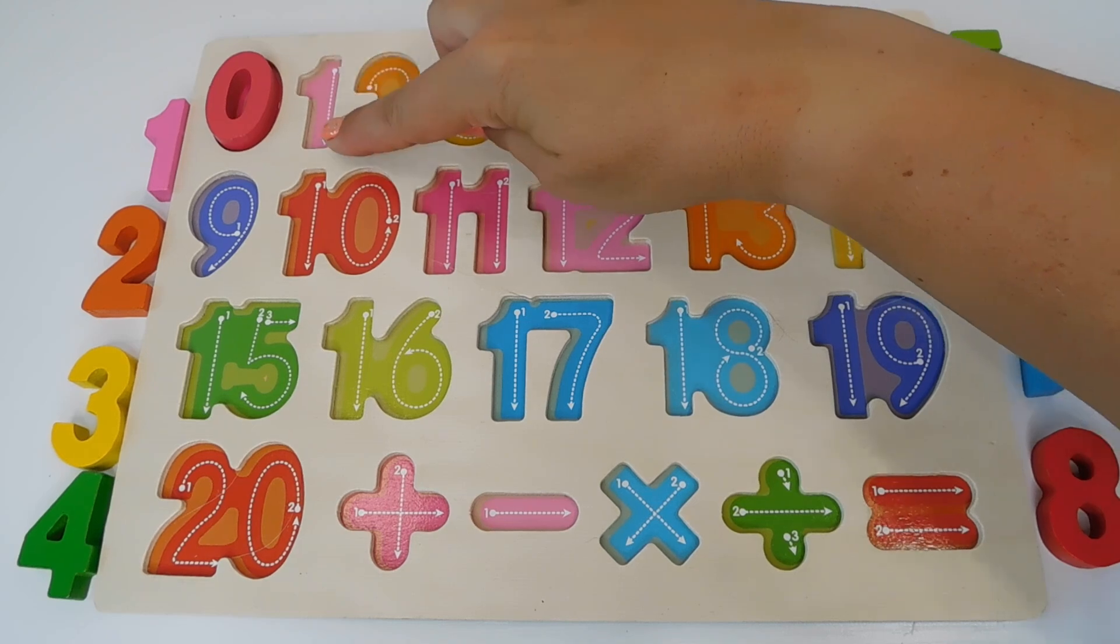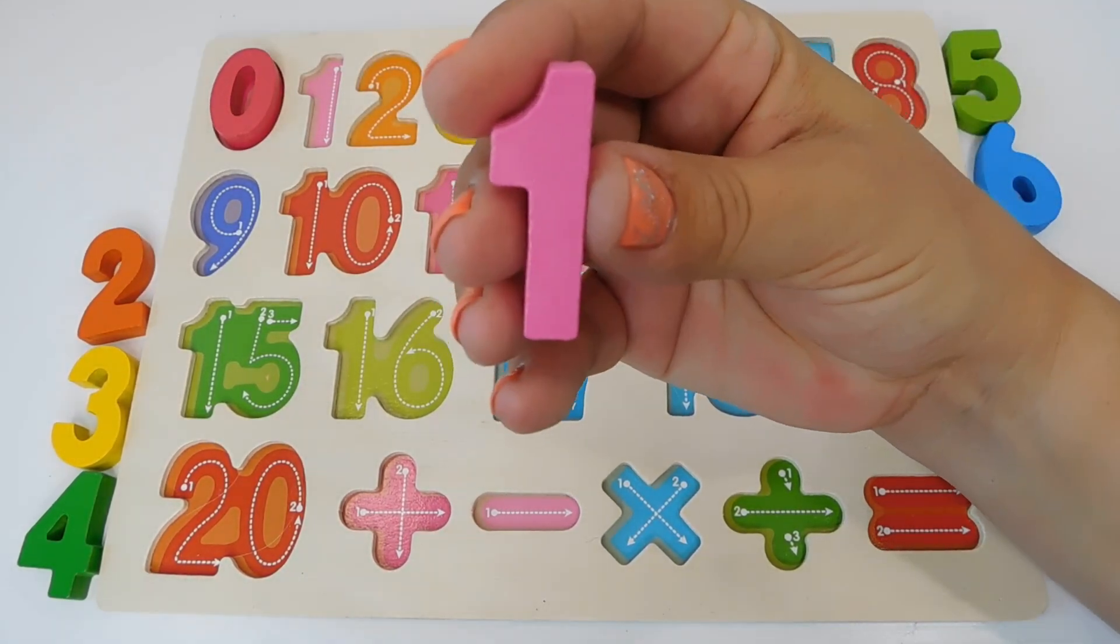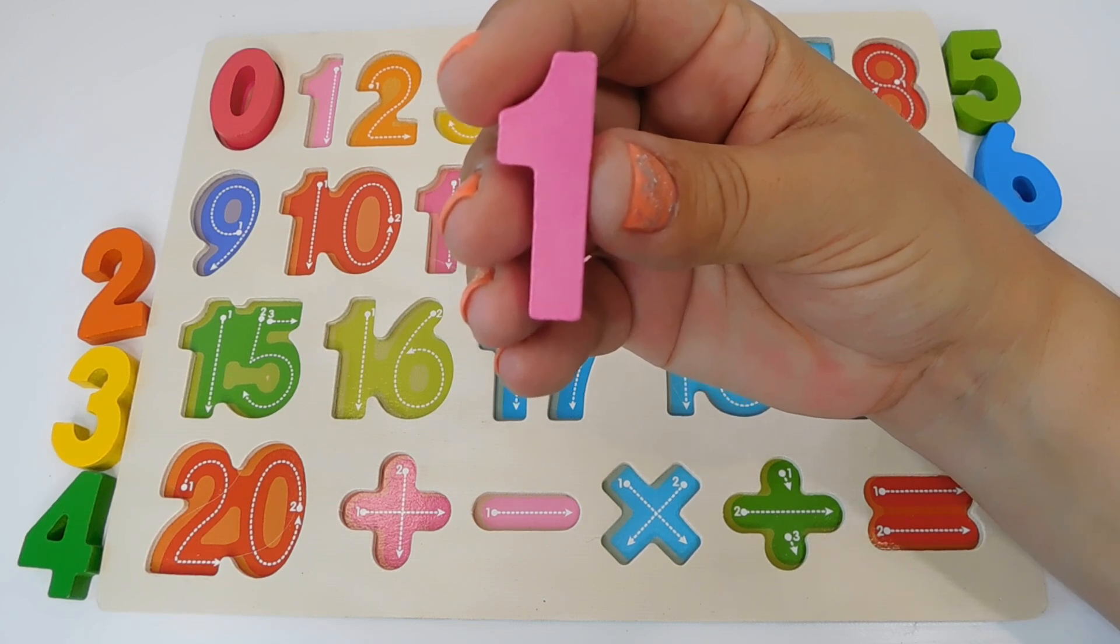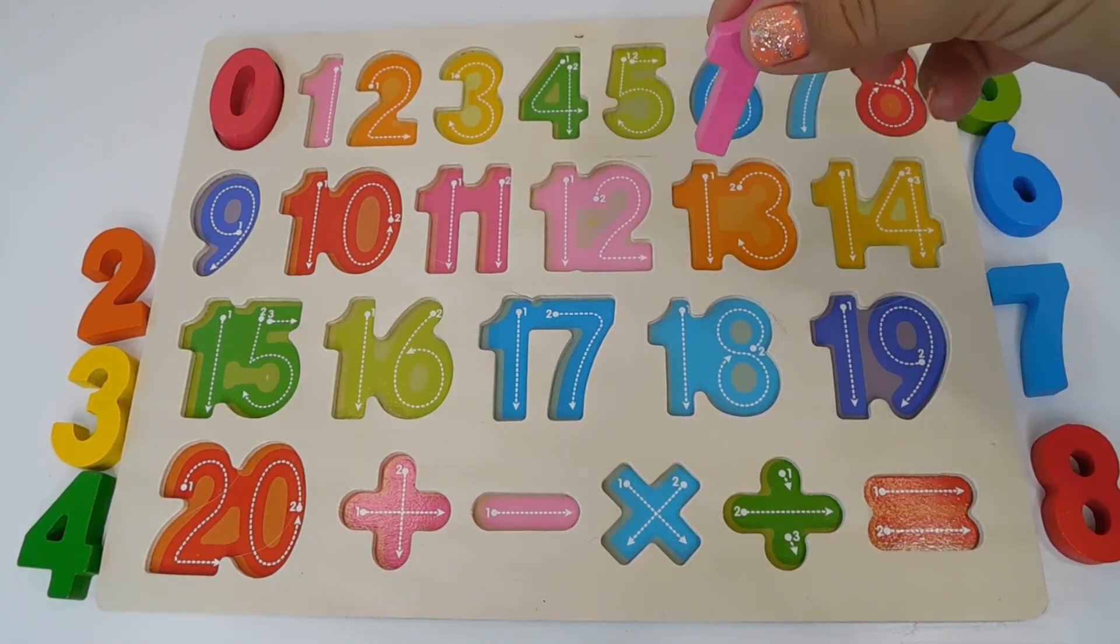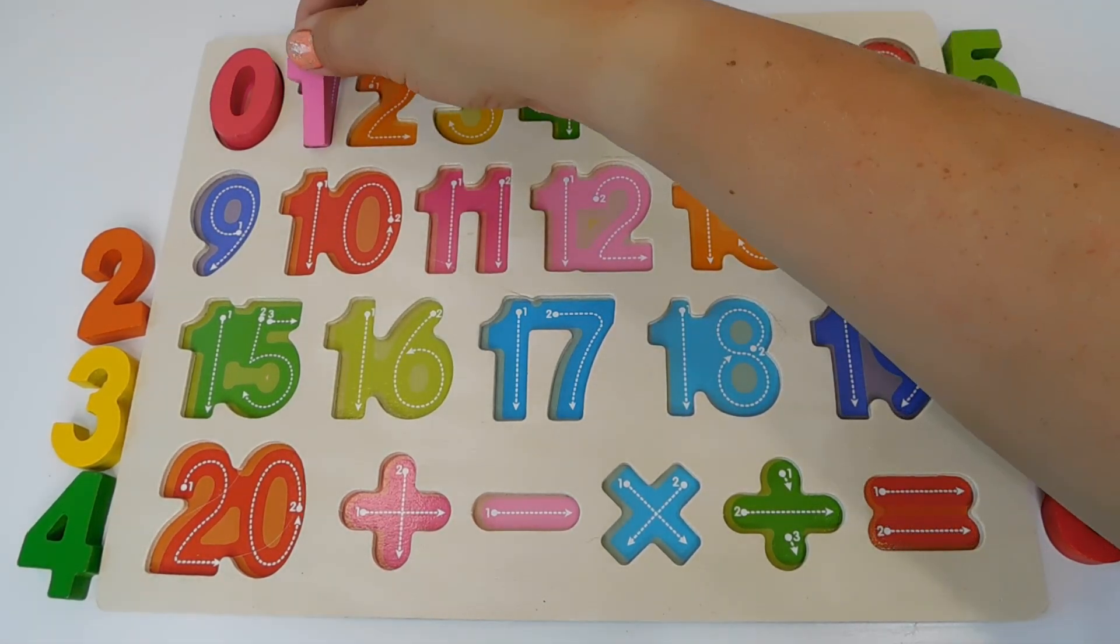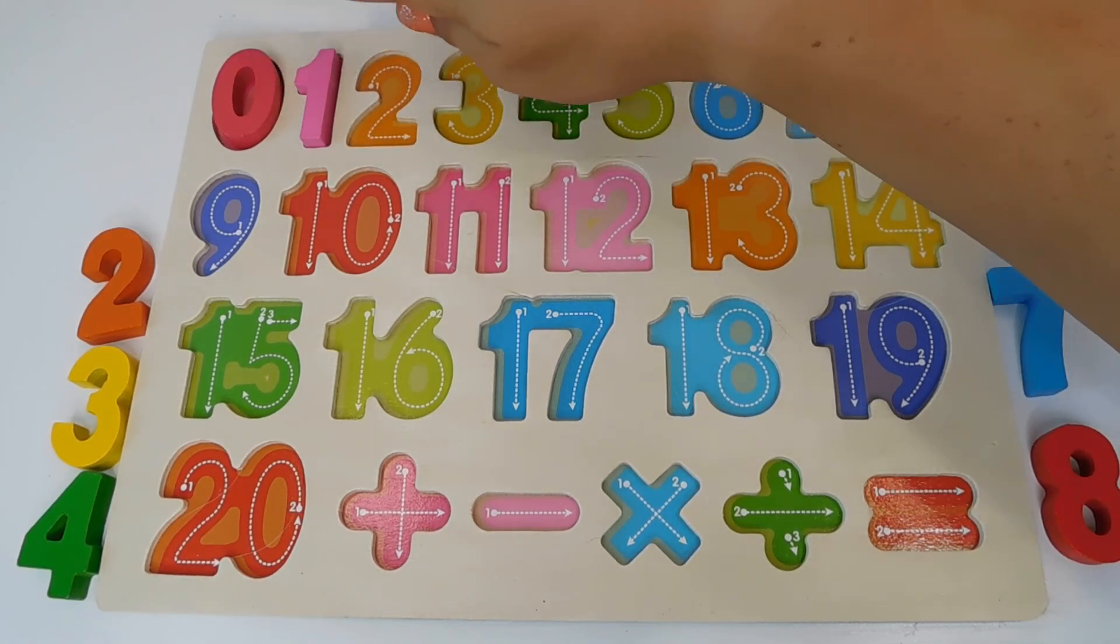Our next number is right here. What is the next number? 1. This is a number 1 and it is light pink. Number 1. Light pink 1 goes here. 0, 1.